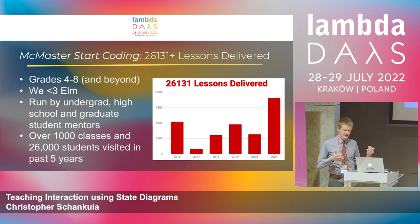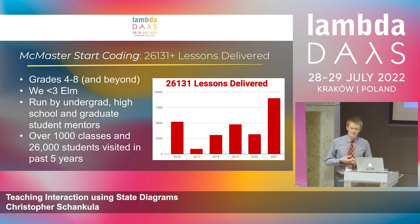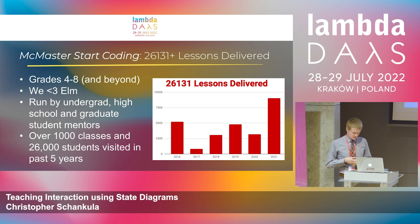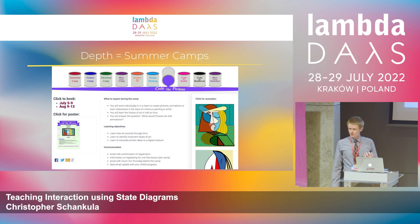If you weren't here in the first talk, we're McMaster Start Coding. We deliver programming lessons in Elm to students around our local area and also beyond now that we're doing virtual. We've taught over 25,000 students in the last five years alone, and we're run by mostly undergrad and graduate student volunteers as well as high school volunteers. We've visited over 1,000 classrooms in the last five years, both in person before the pandemic and now virtually. When we go to schools we don't get into too much depth, but it's really the summer camps where we're able to.